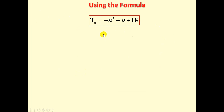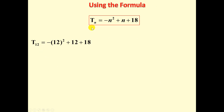So our formula is Tn = 2n² − 3n + 3. Now, if we are given a formula like Tn = −n² + n + 18, we can find any term. For example, to find term 12, substitute 12 into n: −12² + 12 + 18. Using a calculator, that gives us −114.